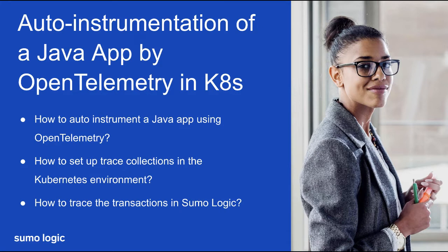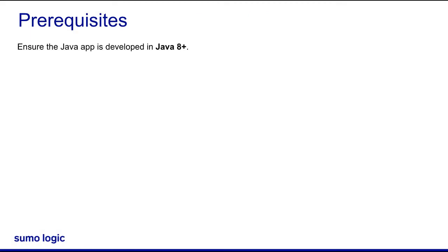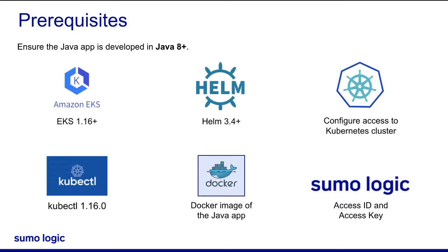OpenTelemetry provides a wide range of ready-to-use components to get us started with distributed tracing. Before instrumenting a Java app with OpenTelemetry, make sure the Java app is developed in Java 8 or a newer version. Also, we'll need to have several prerequisites ready, as shown here on the screen. Note that in order to create a Kubernetes collection in Sumo Logic, my role requires Sumo admin privileges.